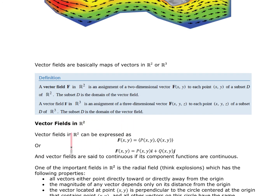We can express vector fields in R2 as a function P(x,y) and a function Q(x,y), or we may write it as P(x,y)i + Q(x,y)j. Vector fields are said to be continuous if their component functions are continuous.